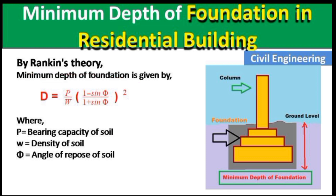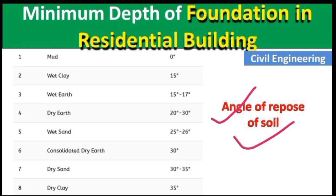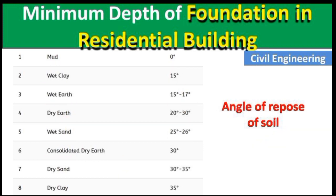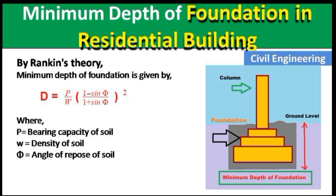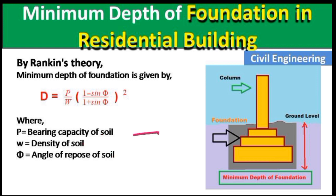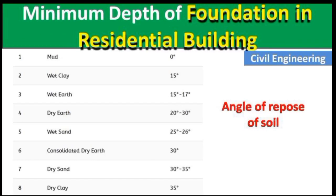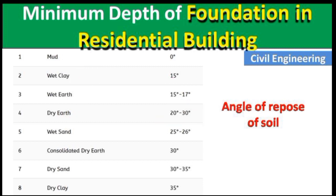The angle of repose for different soils: mud is 0°, wet clay is 15°, wet earth is 15–17°, and dry earth is 20–30°. Remember, all these values — bearing capacity, density, and angle of repose — must be determined in the laboratory through soil testing. You cannot predict them just by looking at soil on-site. These are general average values from lab tests and may differ slightly in practice.